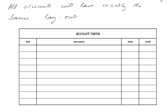All accounts will have exactly the same layout: a big heading with the name of the account, a second row of headings for each column, a column for date, a column for description, a column for debit, and a column for credit. Professional accountants usually add another column with some code number for the entries, but we shall not be concerned with that in this introductory course.